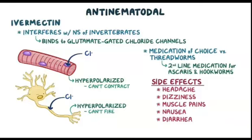Ivermectin is an anti-nematodal drug used especially for filarial worm infestation. Its mechanism of action involves interfering with the nervous system of invertebrates, thereby killing the parasite. It is also used for threadworm and is the first drug of choice for filarial worm. Mild side effects include headache, dizziness, muscle pain, nausea, and diarrhea.